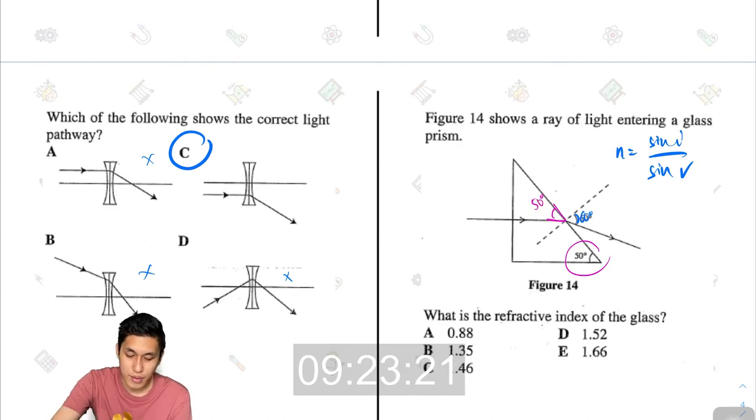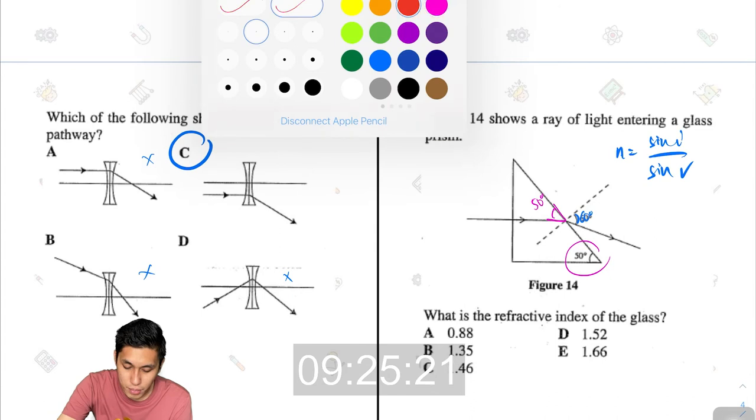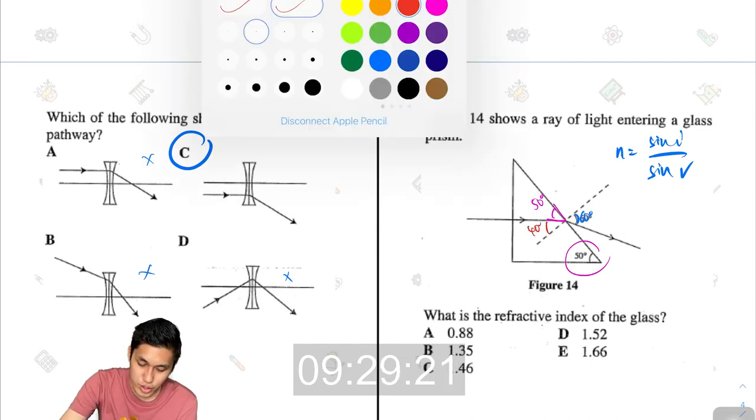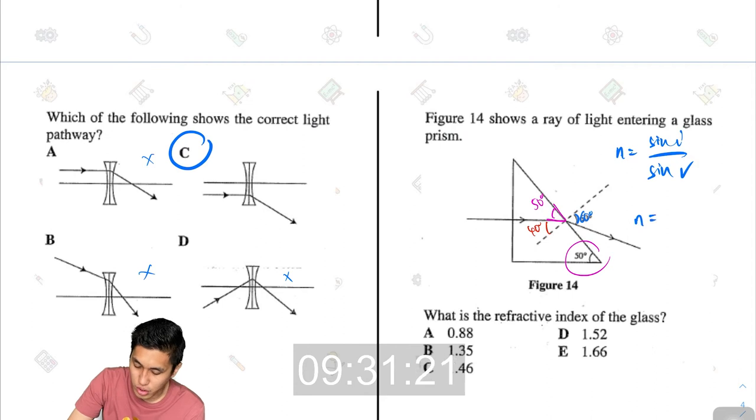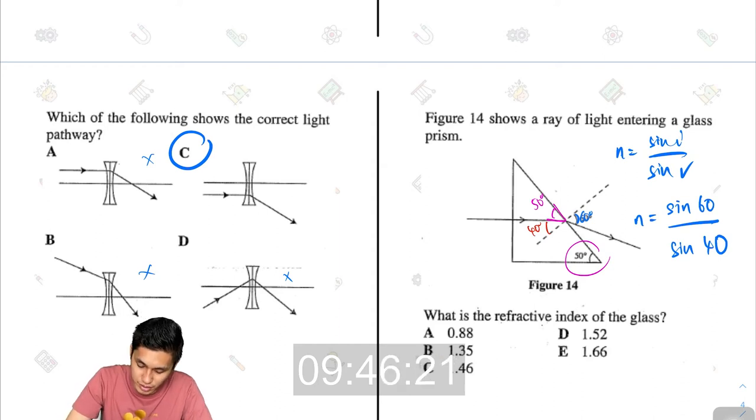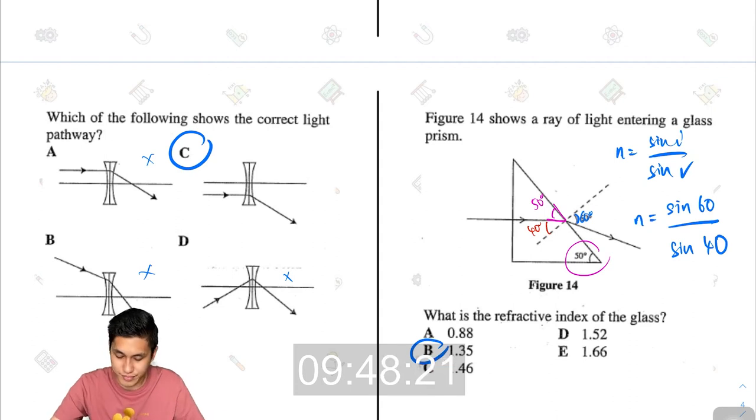Between the ray and the normal, we're left with 40 degrees. So your formula here would be n equals sin 60 divided by sin 40. Sin 60 divided by sin 40, that is 1.347. So it would be 1.35.